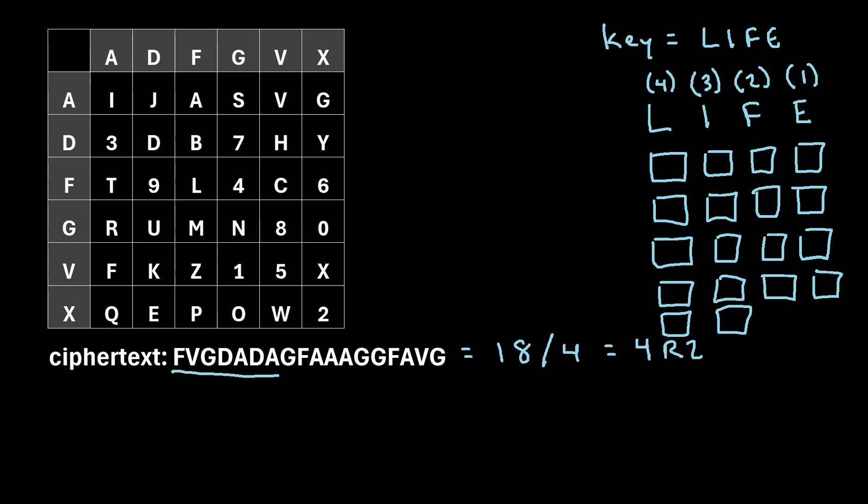So the next step is we need to start writing this ciphertext into the columns of this keyword grid based on alphabetical order. So we said that E is going to be column one, since it's the first letter that appears in the alphabet among these letters. We'll write F, so the first letter right here. Then we'll write V, and then G, and then D. And we already know that this space right here will be blank.